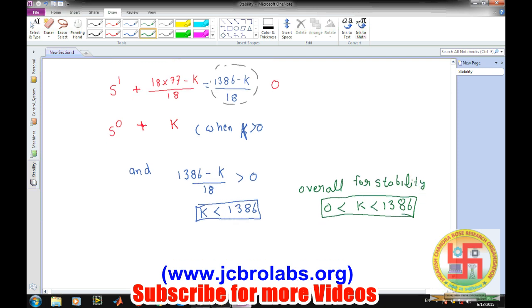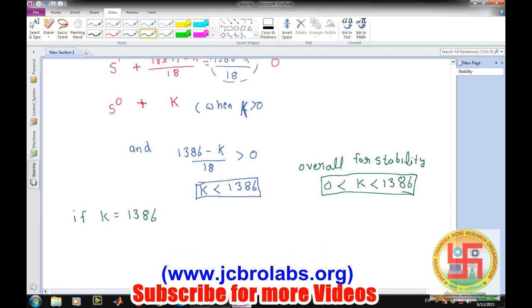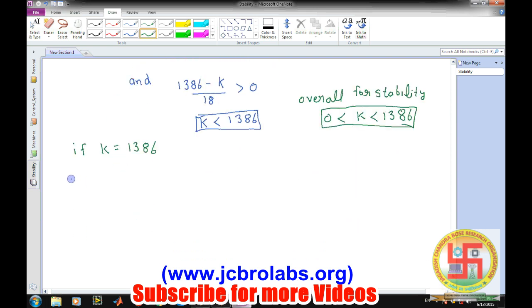Now the next question is what happens if K equals to 1386. If K is 1386, then s cube will remain the same, that was 1 and 77, and then s square will be 18 and 1386. If we have s to the power 1, because we are considering K equals 1386, this term will become 0 and the next term is also 0, so the entire row has been converted to 0.